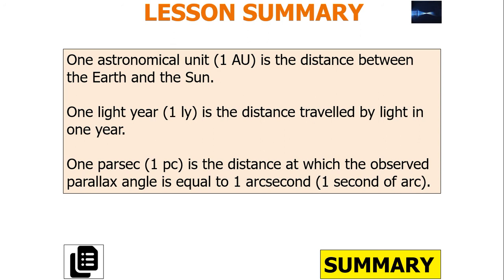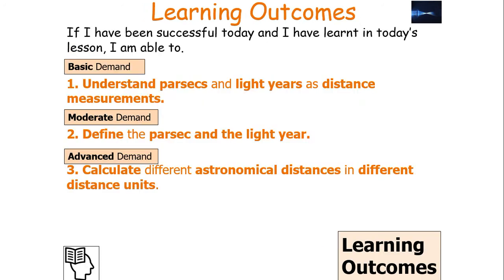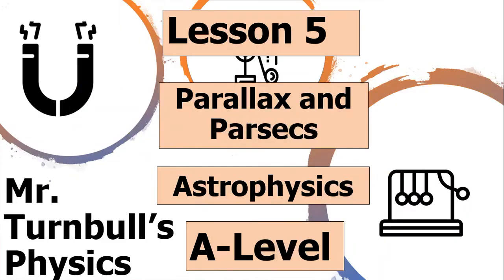So, what have we learnt in today's lesson? 1 astronomical unit (1 AU) is the distance between the Earth and the Sun. 1 light year is the distance travelled by light or any electromagnetic radiation in 1 year. And 1 parsec is the distance at which the observed parallax angle is equal to 1 arc second — that is, 1/3,600th of a degree. If you've been successful in today's lesson, you should be able to understand what parsecs and light years are as distance measurements, define the light year, define the parsec, and calculate different astronomical distances in different distance units. I hope you've enjoyed today's lesson on parallax and parsecs — have a lovely day.